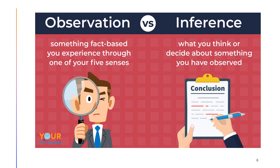What is the difference between an inference and an observation? Observation is just something very factual based on your experience — you just take a look at it. Whereas an inference is what you think or decide about something after you observe. So it is really an informed guess.